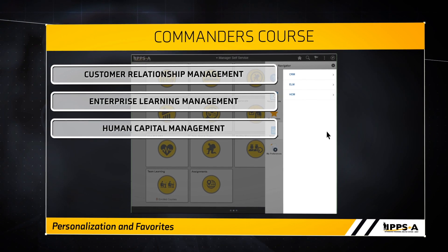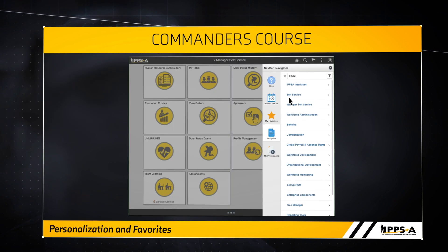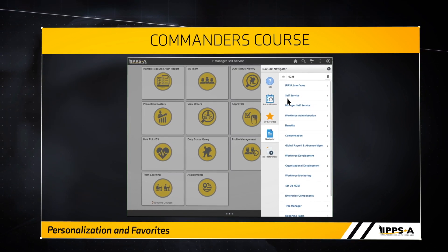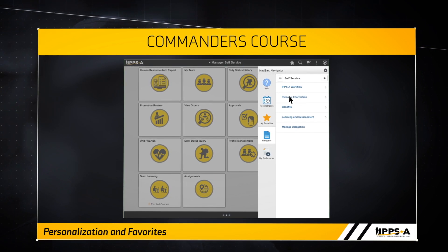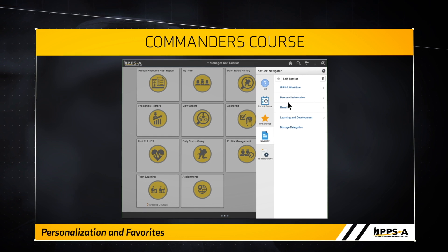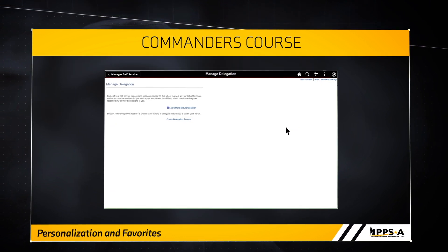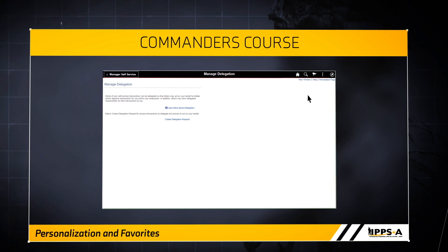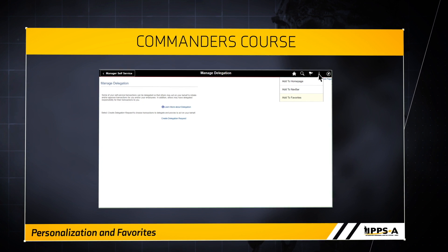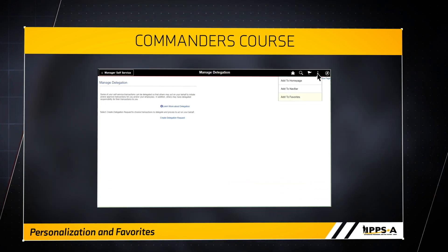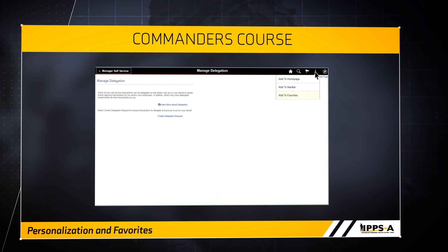In this example, we will set the Favorite to Manage Delegation. Select HCM and a new menu will display. From this menu, select Self Service and another set of menu items will display. Scroll down and select Manage Delegation. Once the Manage Delegation page opens, select the Action List icon, the three vertical dots. Notice how the menu options are different than what was demonstrated earlier.